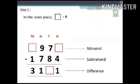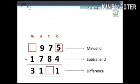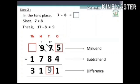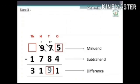Step 1: In the ones place, dash minus 4 is equal to 1, so adding 4 plus 1 is equal to 5. Write 5 in the ones missing column. Step 2: In the tens place, 7 minus 8 is equal to dash. Since 7 is less than 8, borrowing 10 tens from 9 hundreds, leaving 8 hundreds in the hundreds column. That is 17 minus 8 is equal to 9. Write 9 in the tens missing column.